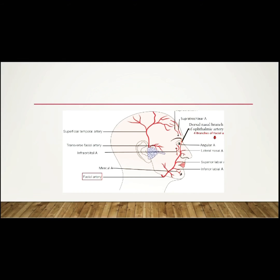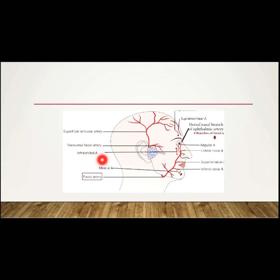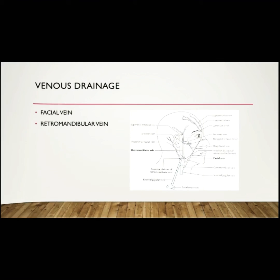Next is the transverse facial artery, which arises from the superficial temporal artery and supplies the parotid gland and its overlying skin. Certain other arteries like the infraorbital artery and mental artery are small arteries derived from the maxillary artery.